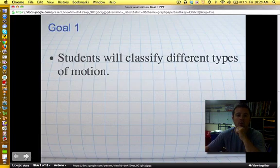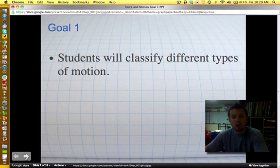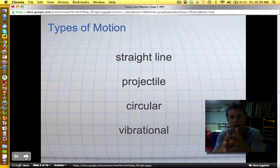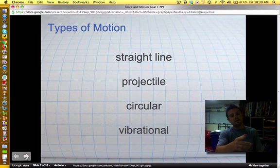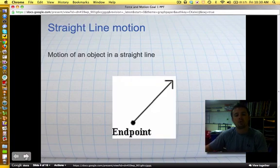So goal one says that students will be able to classify different types of motion. Now what they mean by that is if I've given you an object that is in motion, can you put it into one or more of these four different categories. And what we're going to try to do today is we're going to teach you about these four different categories so you can do that.